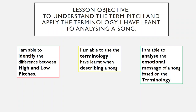In the red box on the right, at the least, you should be able to identify the difference between high and low pitches. Once you're able to do that, in the yellow box in the middle, you should be able to use the terminology you have learnt when describing a song. Then once you're able to do that, the green box on the right — you should be able to analyse the emotional message of a song based on the terminology, describing what effect the terminology might have on someone emotionally.